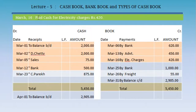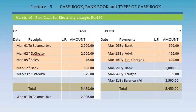March 16: paid cash for electricity charges, Rs. 420. Again this is a cash payment, so we record it on the credit side of the cash book: March 16, by electricity charges, Rs. 420.